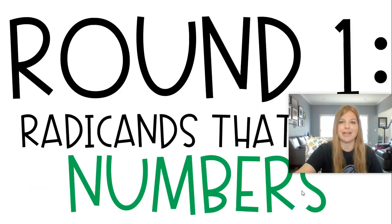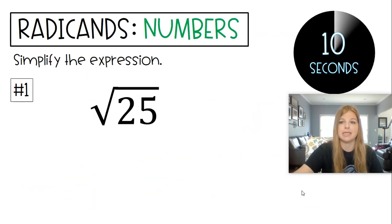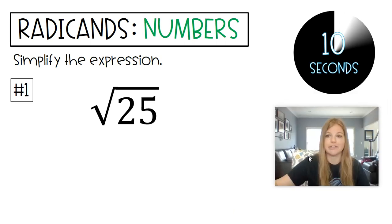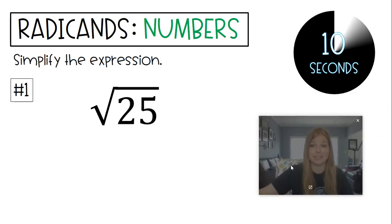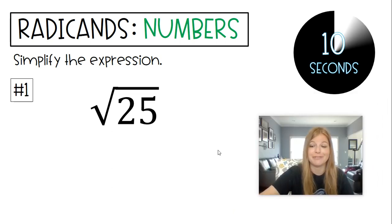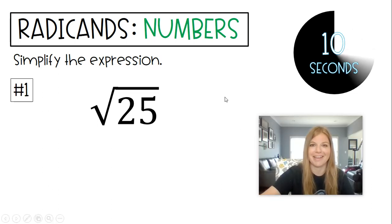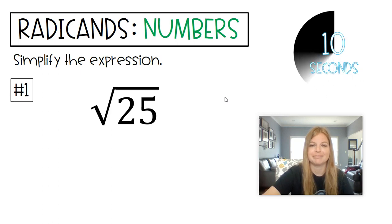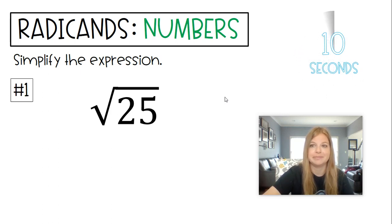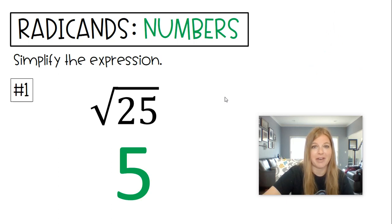Follow along with me, ready? Round 1 — radicands are numbers. Here's our first one: square root of 25. This one should obviously be very, very easy for us. The answer is simply 5, because 25 is a perfect square. But the rest of these are not perfect squares.